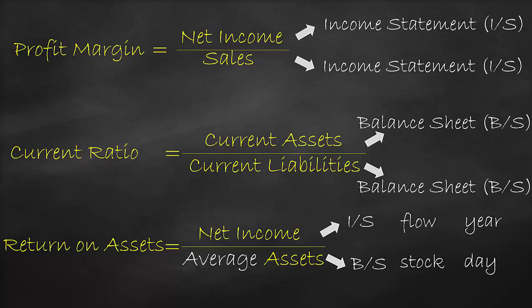So we will use one income statement and two balance sheets. Therefore, if a financial ratio has two items from the same financial statement, use the same year. If a financial ratio includes an item from the income statement and an item from the balance sheet, we use the income statement item and get the average of the balance sheet items. So we can rewrite the return on assets ratio as net income divided by average assets.